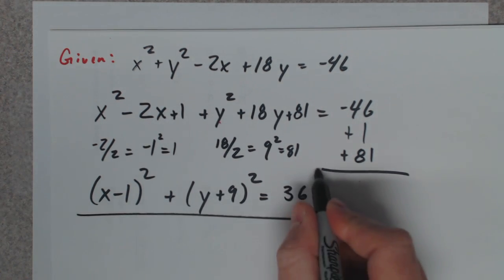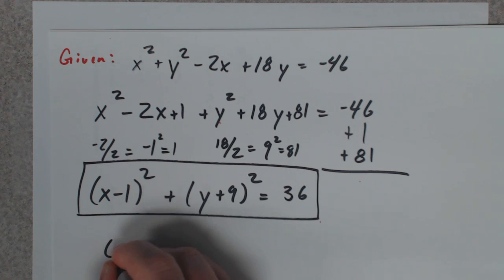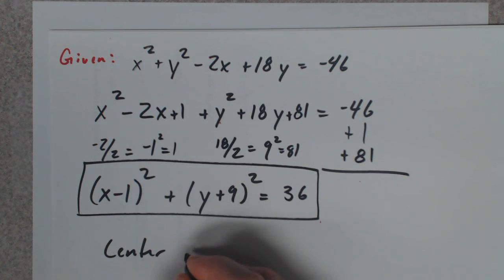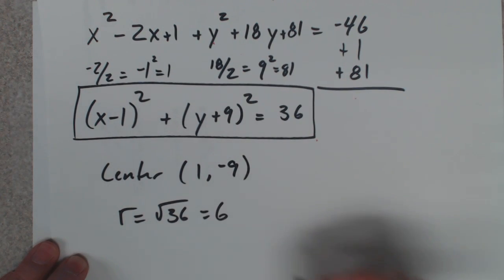So that's your equation. The center is at (1, -9) and the radius is the square root of 36, which is 6.